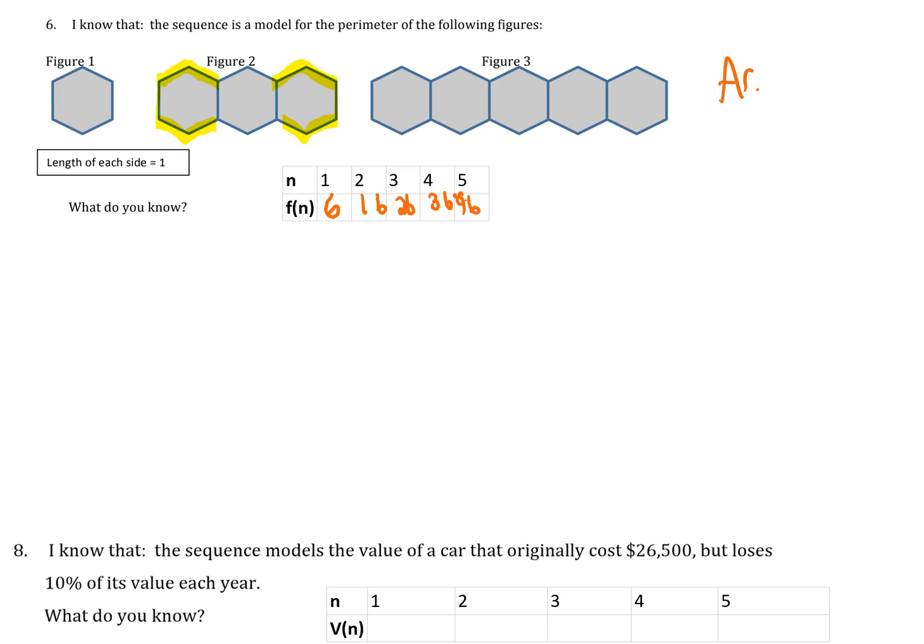This is an arithmetic sequence because it's adding 10 every time, so the common difference is 10. We've got a table, we've identified it's arithmetic, we found the common difference. Now we could think about our recursive rule: x_n = x_(n-1) + 10, and x_1 = 6.